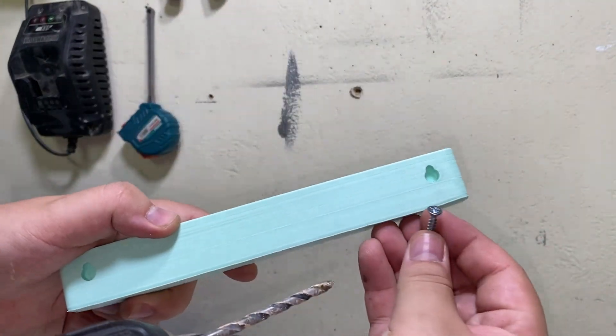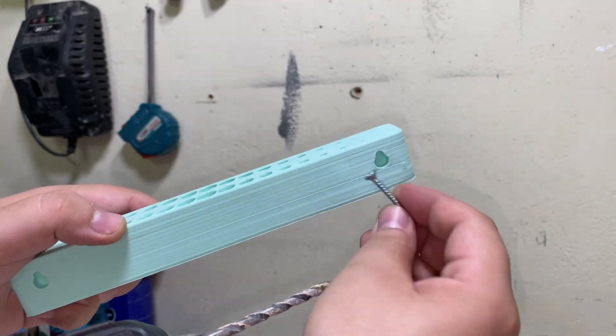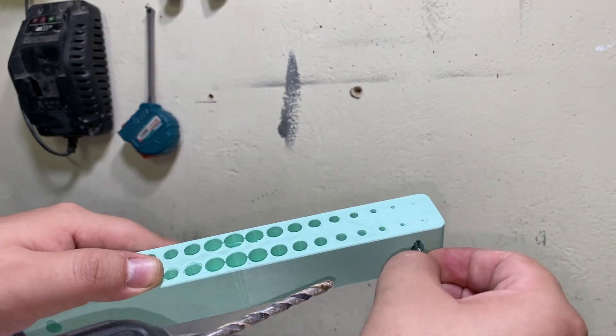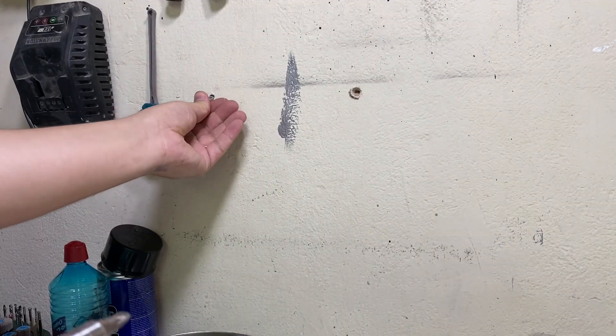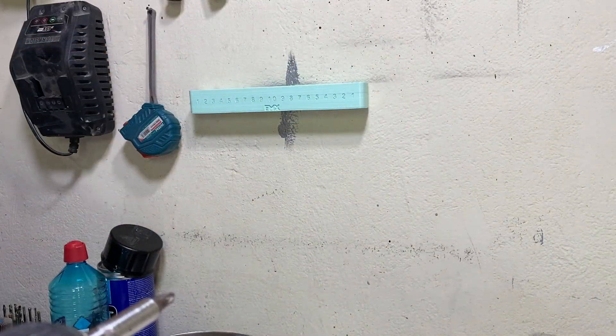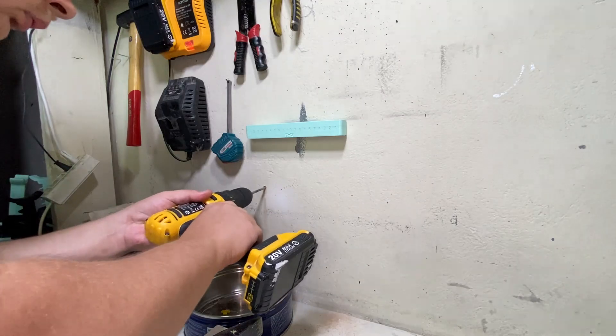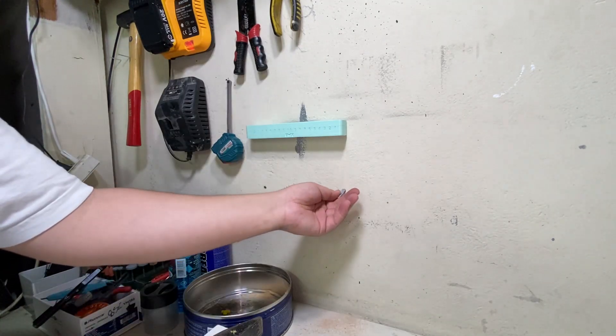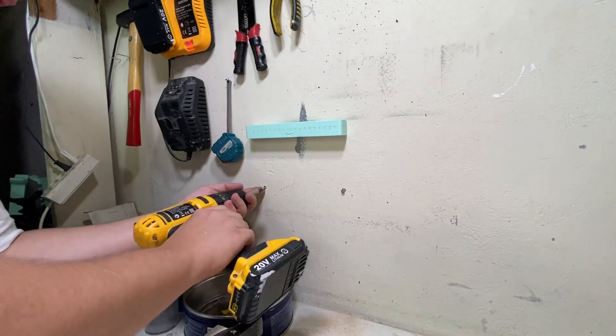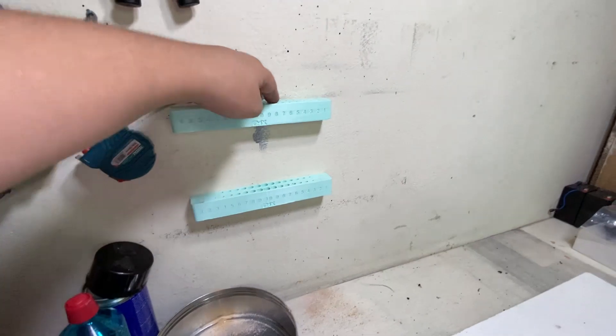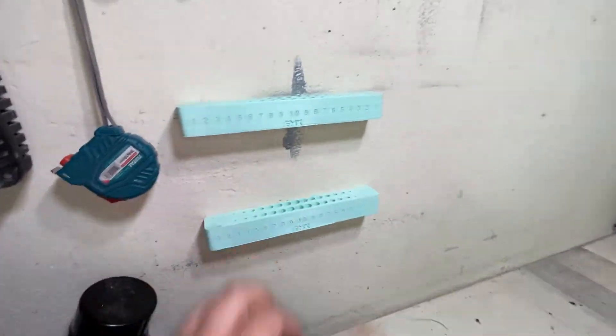These screw holes will fit whatever is below seven millimeters screw head and below four millimeter shaft. Like that. So they are here on the wall. Very easy to install. Very firm as you can see.